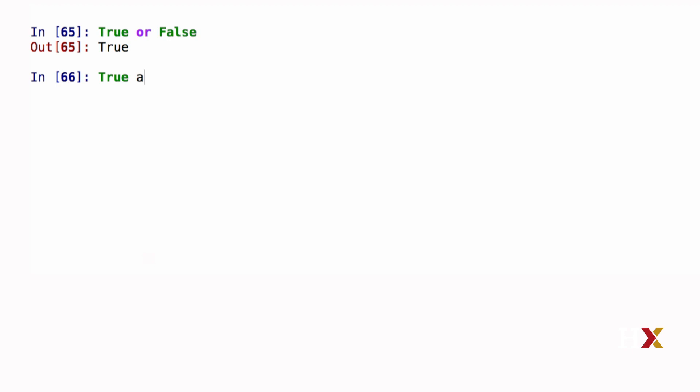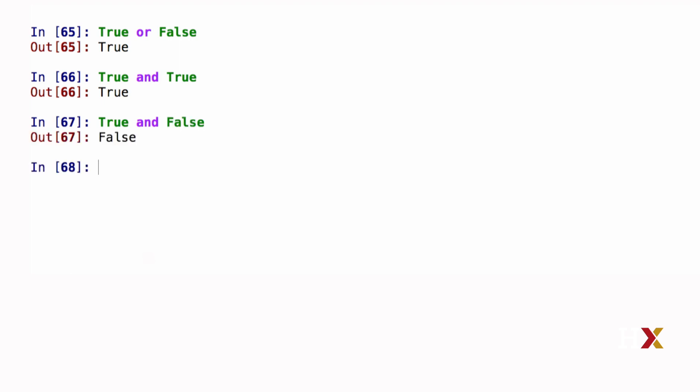And is only true if both objects are true. So if we type True and True, the answer is True. However, if we turn the second True to False, and returns False. In order for and to be True, both of the objects need to be True.